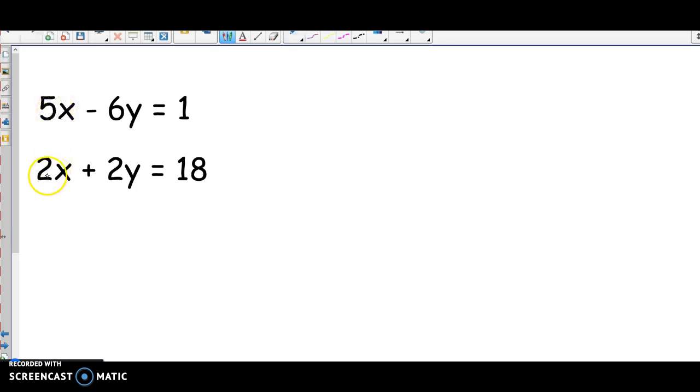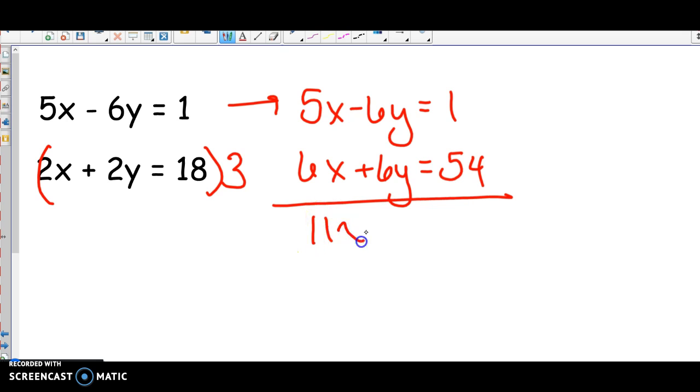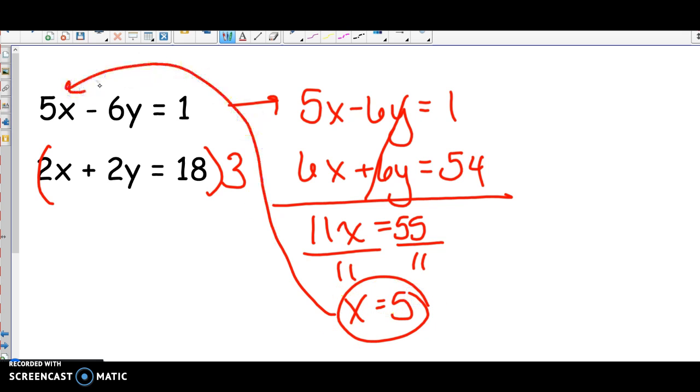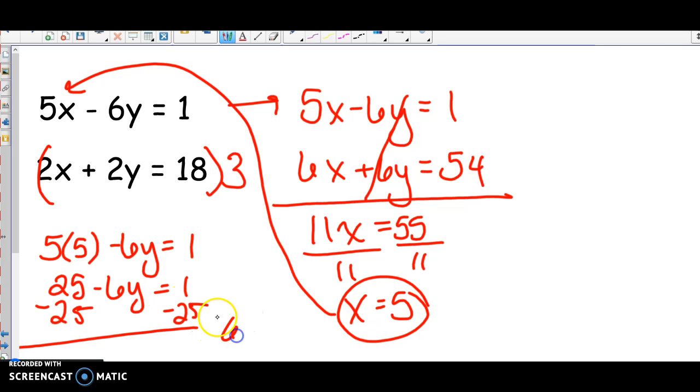Again, looking at the equations, I see I have 5, 2, negative 6, 2. Because negative 6 and 2, one's positive and one's negative, I'm going to change those. So I'm going to multiply the bottom one by 3. This one stays the same. This one becomes 6x plus 6y equals, don't forget to multiply the answer, that's the biggest mistake students make, 54. Now combined, you get 11x, those cancel, equals 55. Divide both sides by 11, you get x equals 5. Take that, plug it into one of the equations. 5 times 5 minus 6y equals 1. This is 25 minus 6y equals 1. Subtract 25, I get negative 6y equals negative 24. Therefore, y equals positive 4.